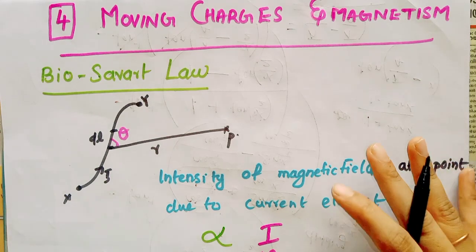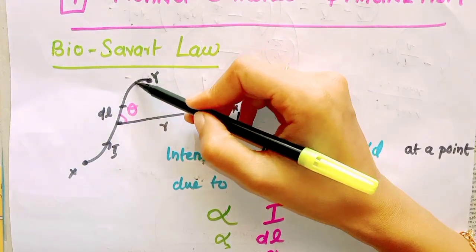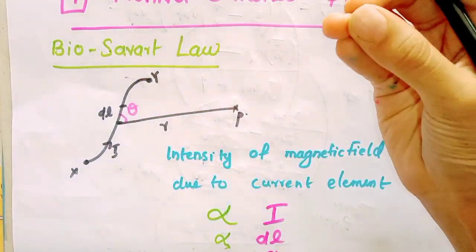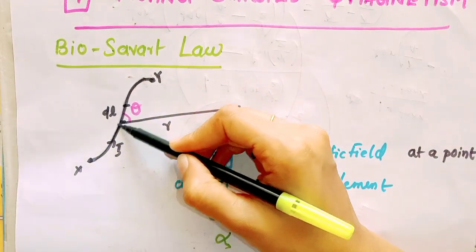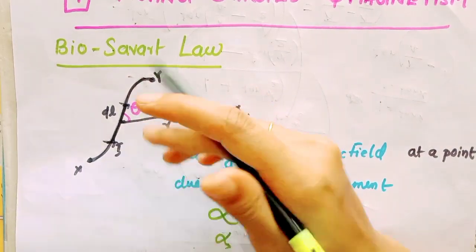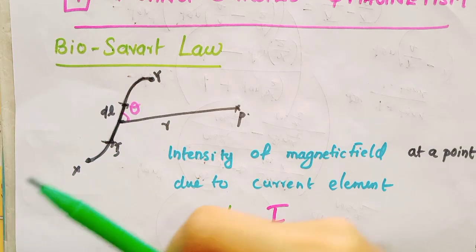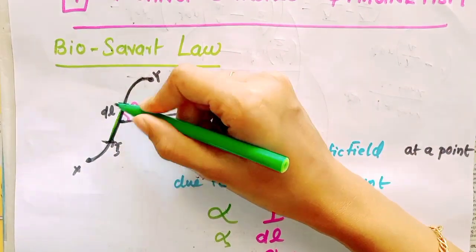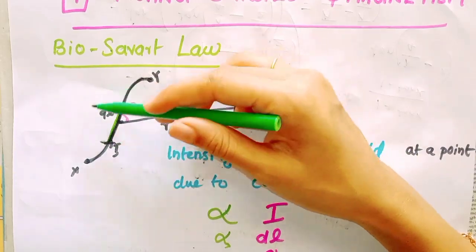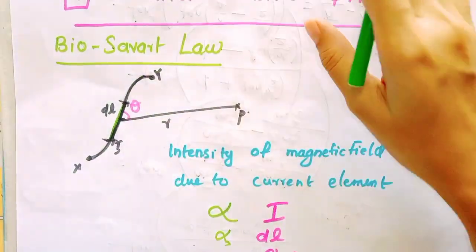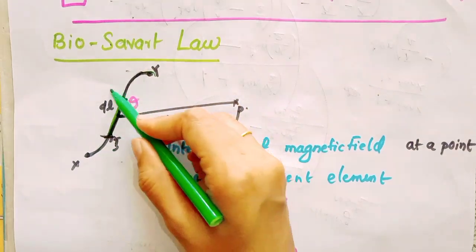Here we are talking about Biot-Savart Law. Here we have a particular current element. This is a small length dl — a small portion of the conductor. Then, we have a magnetic field produced by this current element.